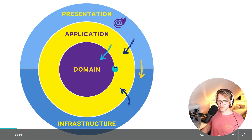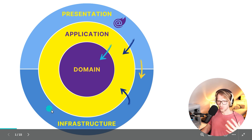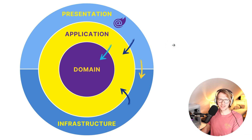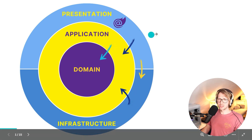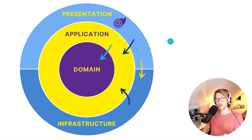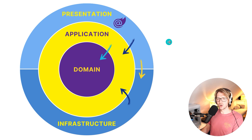In the infrastructure layer - which comes after the application layer - you would see external services. The best example is data persistence, meaning database access and Entity Framework. Entity Framework has its place in the infrastructure layer. Then we have the presentation layer, which is the user interface - often called 'web UI' for a web application. In Blazor it would make sense to call this the web UI project.